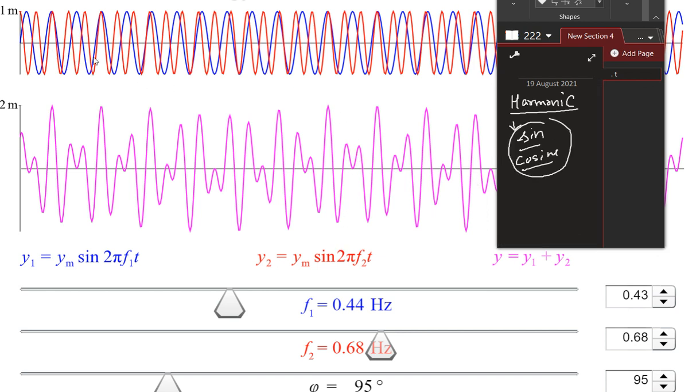For example, here we have two sine waves. One equation is y1 equals ym sine 2 pi f1 t. So this is a sine wave, and the second one is y2 equals ym sine 2 pi f2 t.